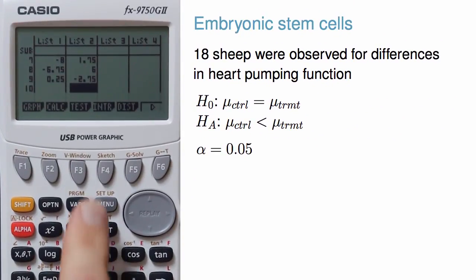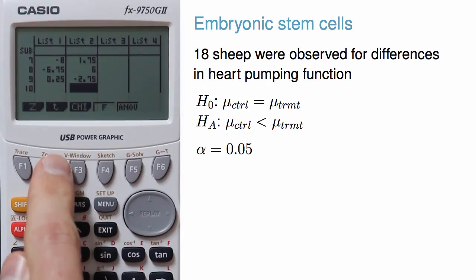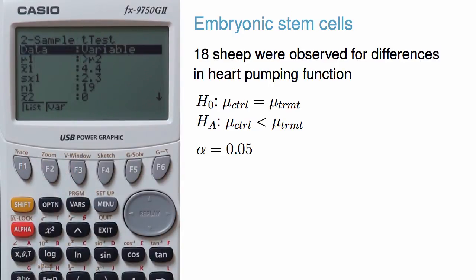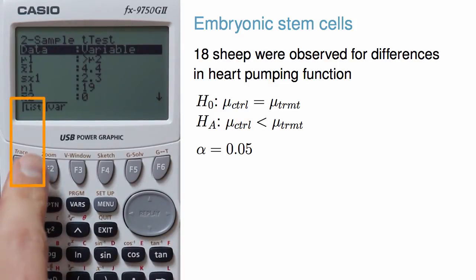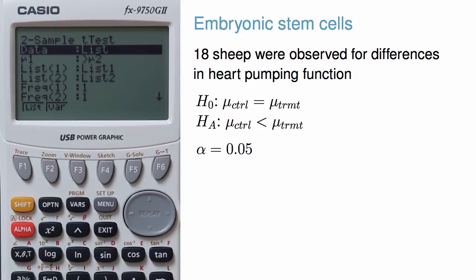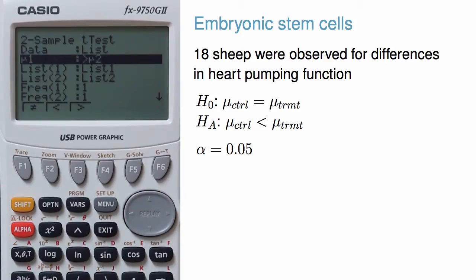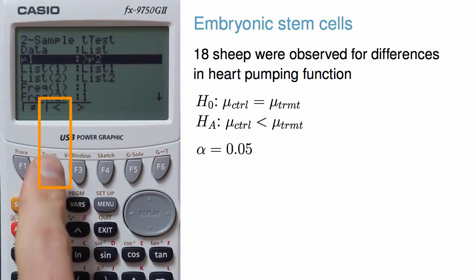With the data entered, I'll go to test for hypothesis test, and then t for t-test, and I'll choose 2s for two samples of numerical data. I start by indicating that I'll use lists for the data in the test. Next, I specify the sidedness of the hypotheses. I'll think of mu1 as representing the control group and mu2 as representing the treatment group, so I'll choose less than.